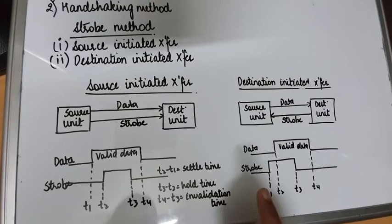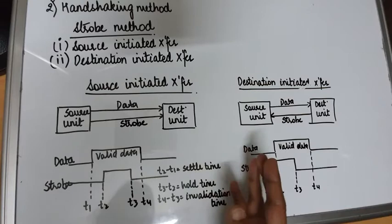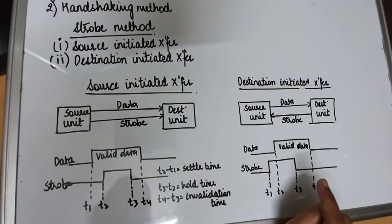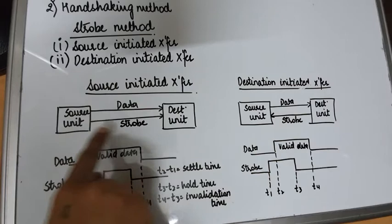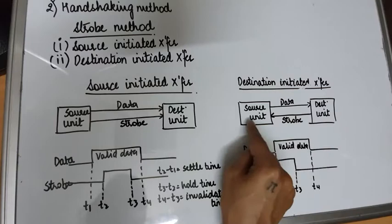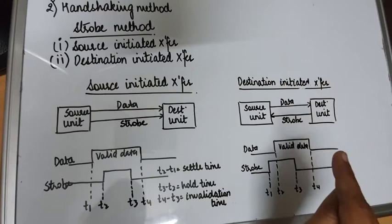Now we will study destination-initiated transfer. For any kind of data transfer, you will always need a source unit and a destination unit. The data bus will always be directed from the source unit to the destination unit. Here the signal direction changes — the strobe signal was from source to destination, but now the strobe signal is from destination to the source, hence the name destination-initiated data transfer.